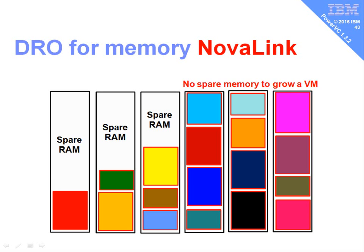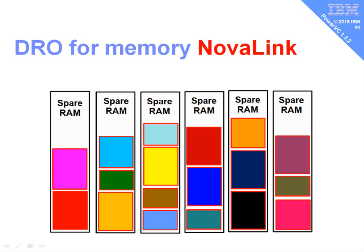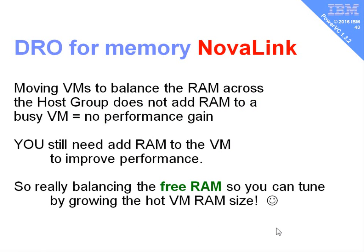Here's a diagram to illustrate: three machines on the left have lots of spare memory — if a VM needs more, you can add a few gigabytes instantly. Three machines on the right have no spare memory — if one becomes bottlenecked, you'd first have to find spare memory elsewhere, live partition migrate the VM, then grow it. If DRO balances free memory across machines first, every machine has some spare. When any VM has a performance problem you can quickly add memory to it. If a machine fills up, DRO reshuffles work to another machine with spare memory, maintaining free memory everywhere so quick actions are always possible.